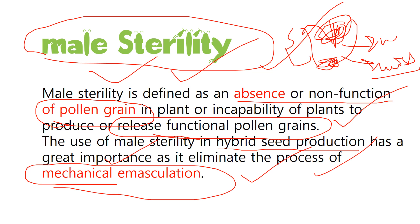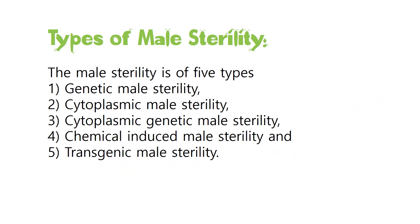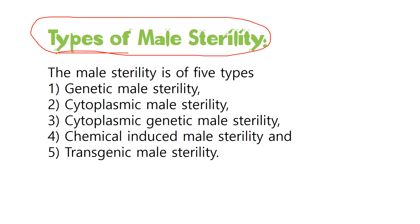You don't need to pluck the male part out from the flower by hand. By inducing male sterility, the pollen grains either don't produce or become ineffective. This is the technique usually followed in male sterility.